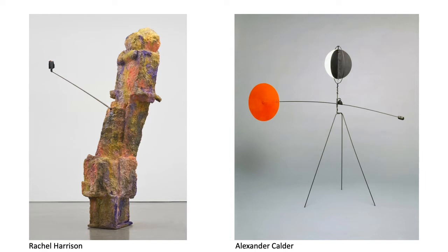The Alexander Calder sculpture on the right is thin and made of metal, but it seems to have a head, legs, and arms — it's like a stick figure drawing come to life. Rachel Harrison's sculpture on the left takes up the space of a person, and what is sticking out from its side? It's a selfie stick, which implies it is human-like, or a stand-in for a person. Both of these sculptures don't exactly look like humans; they are, in fact, quite abstract.